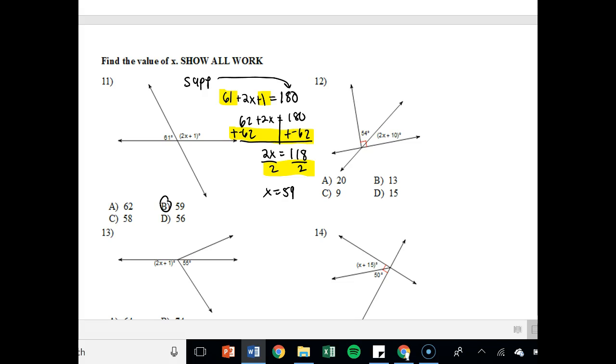I'm going to do problem number 12. This time we do have a complementary relationship because I see that right angle there. So I'll say 54 plus 2x plus 10 equals 90. Not 180, but 90. Why was it 90? Because it was complementary. So my like terms are 54 and 10 because they're on the same side of the equal sign. If they were on different sides of the equal sign, then I'd have to be moving them. But we get 64 plus 2x equals 90. You will add a negative 64 to both sides. You get 2x is equal to 26. I'll divide by 2. So I have x is equal to 13. So B.